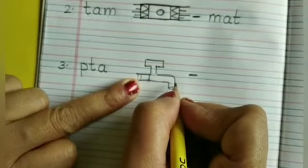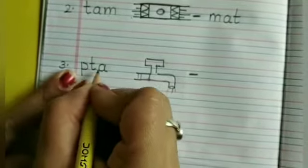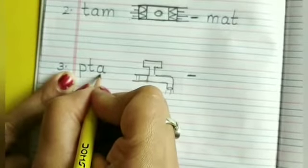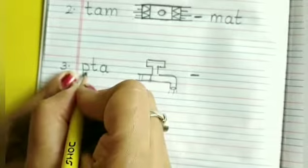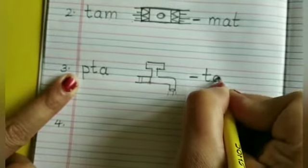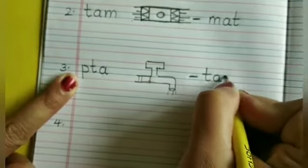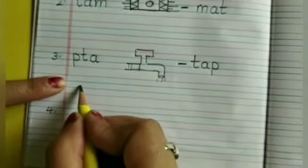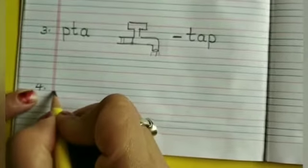T, A, P. Tap. Is it correct form? No. T, A, P. Tap. So now leave this line. Come to the fourth line.